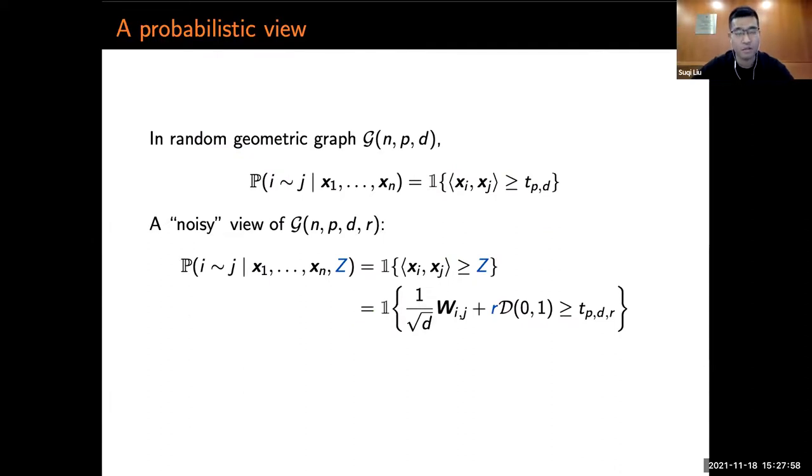Actually, there is an alternative noisy view of G(n,p,d,R). In random geometric graph, the connection is determined by comparing the inner product with a fixed threshold. In G(n,p,d,R), we introduce this random variable Z. Now the connection is determined by comparing the inner product with something wiggling around the constant. Further, if we move the randomness to the left, this actually becomes an entry-wise perturbation or noise to the Wishart matrix in the random geometric graph. The takeaway here is softness in those geometric graphs is roughly noise.